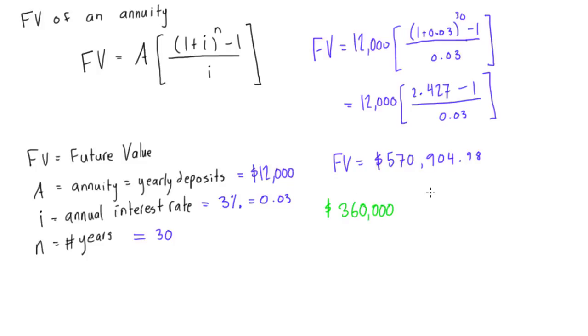and then the amount of interest you've got is just 570,000 minus 360,000, so you'll actually, for not doing anything other than giving the bank your money, you'll get $210,904.98. So not bad, $210,000 for not actually having to work that much, as long as you can come up with $360,000 across 30 years like this.